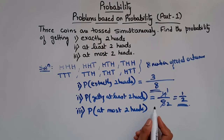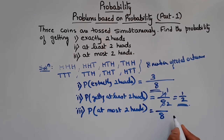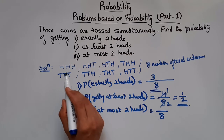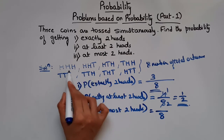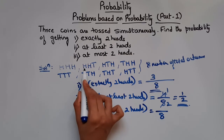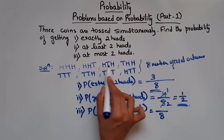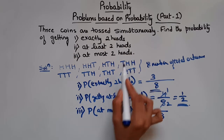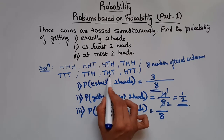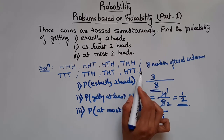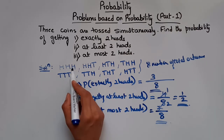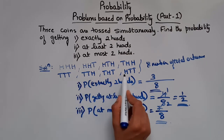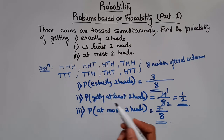Now we have to find the probability of getting at most 2 heads, which means maximum 2 heads — not beyond that. Total possible outcomes is 8. At most 2 heads means 0, 1, or 2 heads. Head head head has 3 heads so it is not included. The remaining 7 outcomes all have 0, 1, or 2 heads. So 7 number of favorable outcomes. Therefore probability of getting at most 2 heads is 7 by 8.